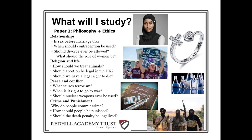Then in peace and conflict, we've got: what causes terrorism, and we're going to have a look at different terrorist groups from all kinds of different religions. We're going to talk about whether it's right to go to war and if so, should there be any rules about what you can and can't do in a war? We're going to look at nuclear weapons and the idea of disarmament and whether that's realistic.